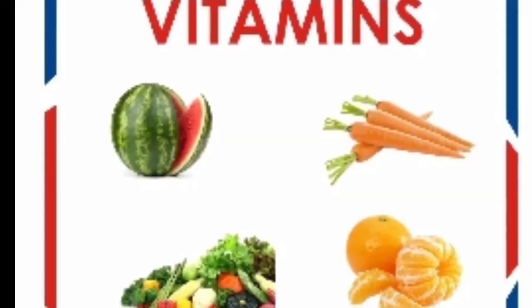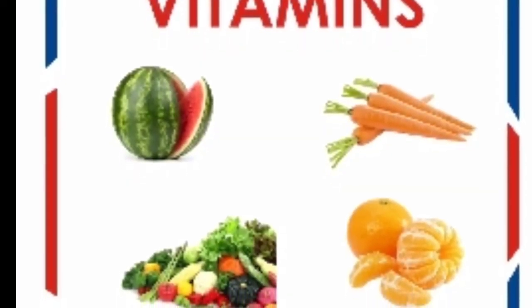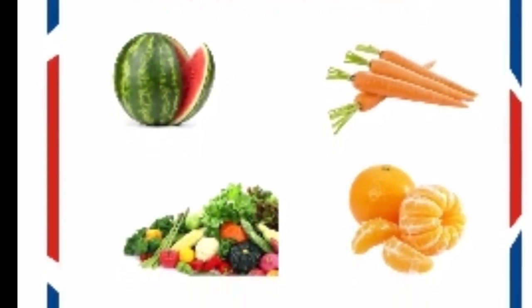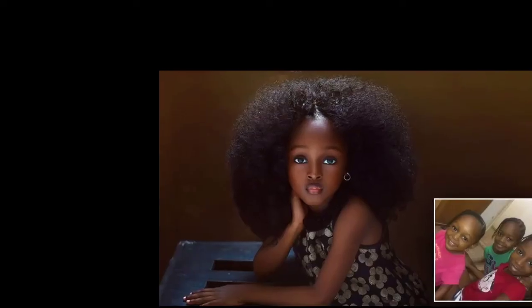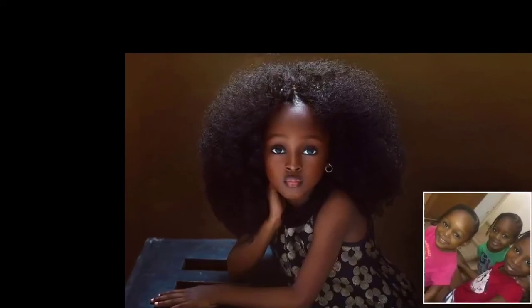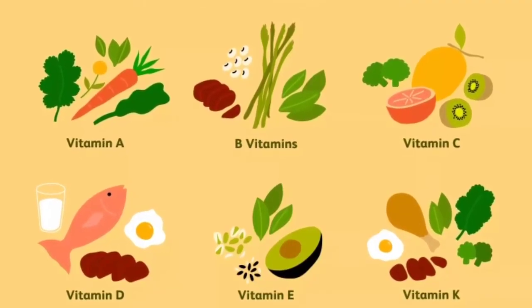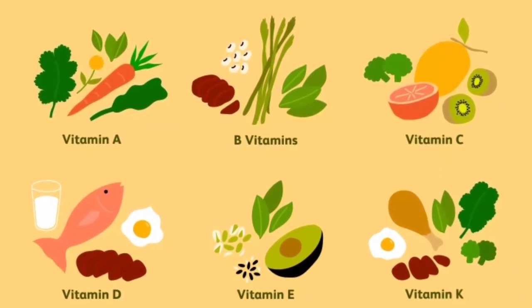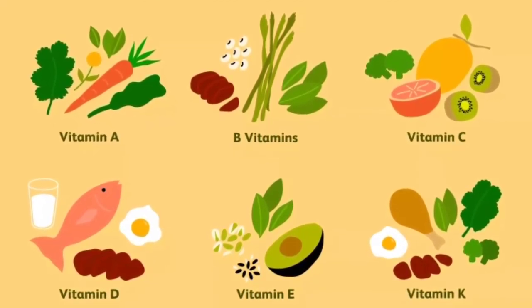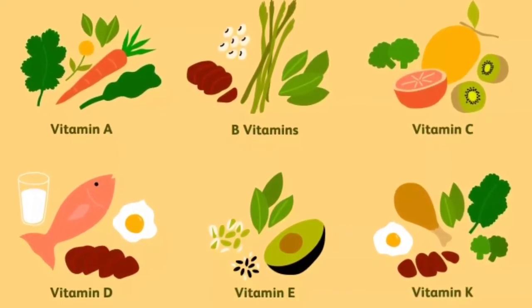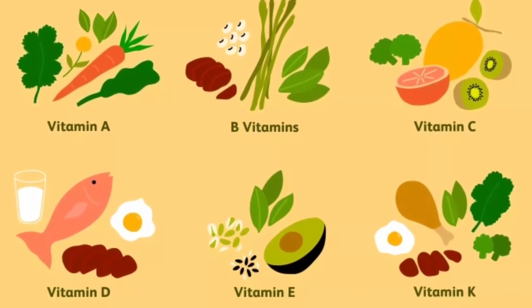Now let's move on to vitamins. Vitamins are necessary for the healthy functioning of our bodies. We need vitamins to help us grow, to see correctly, to form bones, muscles, skin, and organs, and to help us fight infection. There are different vitamins: vitamin A, vitamin B, vitamin C, vitamin D, vitamin E, and vitamin K.